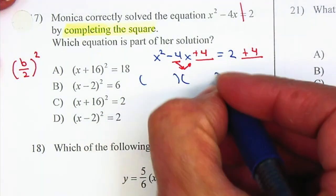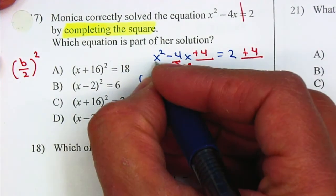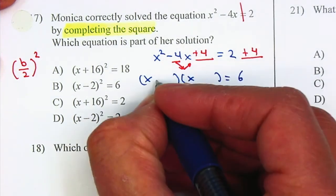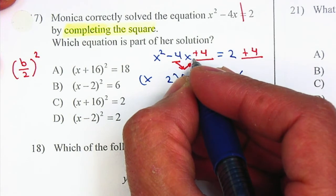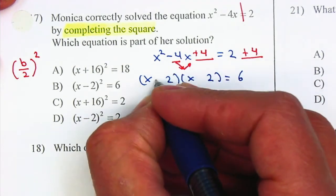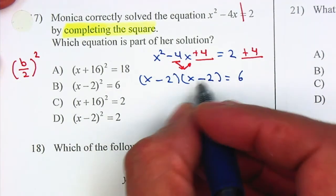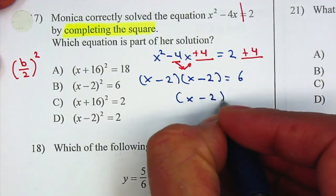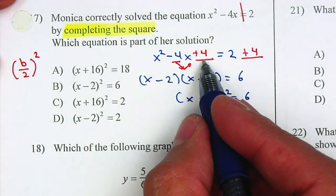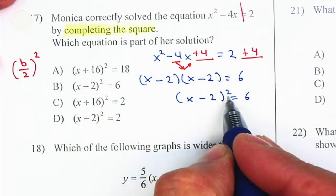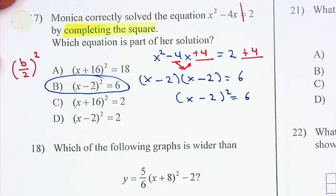From here, we're going to factor it. On the right-hand side, we end up with a 6. Factors of x squared will be x and x. Factors of 4 will be 2 and 2. They both have the same sign for it to be positive 4, but they need to add up to a negative number, so they both have to be negative. We have two of them exactly the same, so we have x minus 2 squared equal to 6. Therefore, our answer in this case will be letter B.